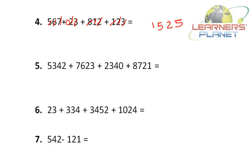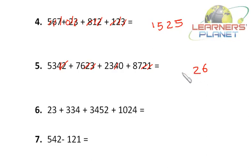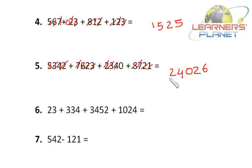Next problem: 5342 + 7623 + 2340 + 8721. Let's begin: 2 + 3 = 5, + 0 = 5, + 1 = 6. Then 4 + 2 = 6, + 4 = 10, + 2 = 12 — write 2, carry 1. Then 1 + 3 = 4 — wait, 1 + 7 = 8, + 3 = 11, + 6 = 17, + 3 = 20 — write 0, carry 2. Then 2 + 5 = 7 — 2 + 8 = 10, + 2 = 12, + 7 = 19, + 5 = 24. So it's 24026 — very fast, very interesting, and very easy.